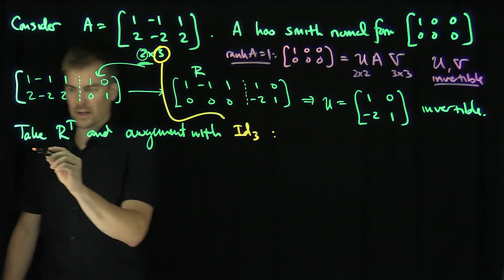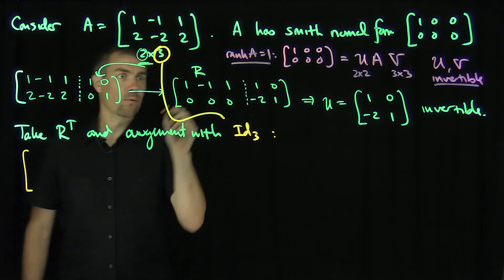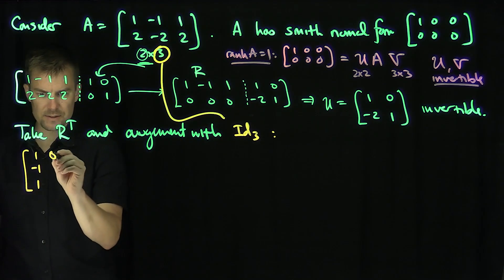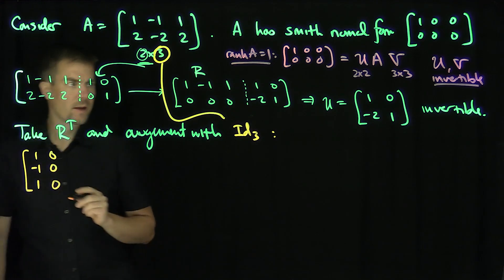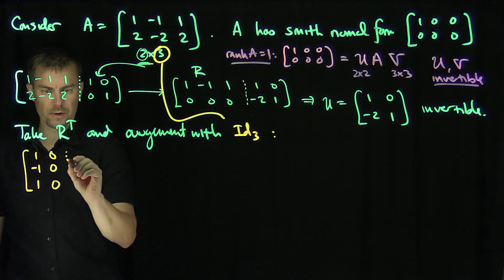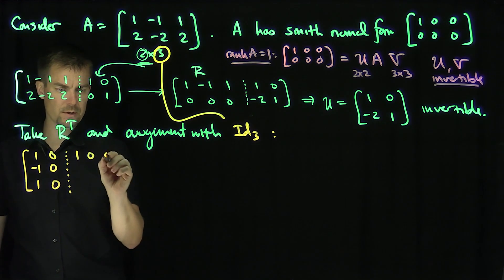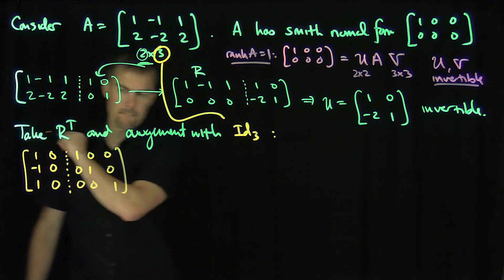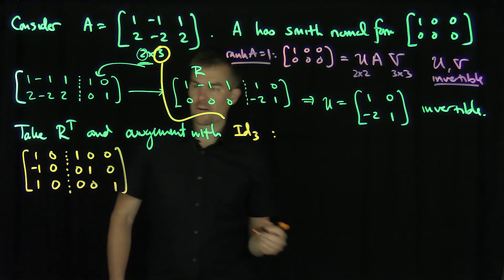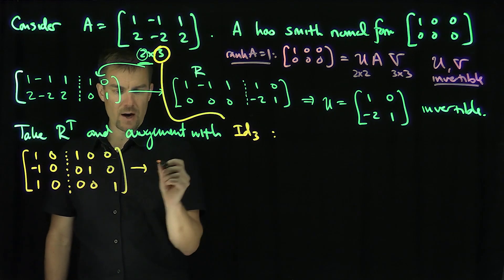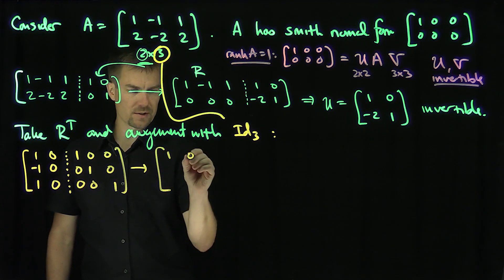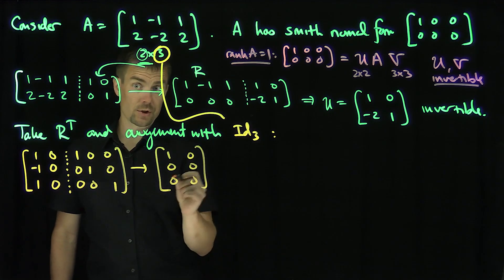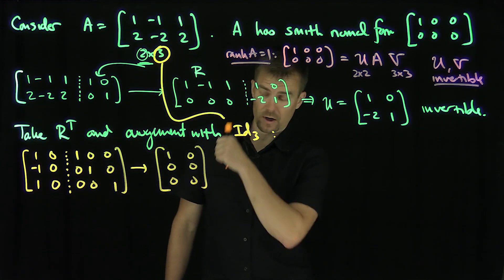The augmented matrix is: row [1, -1, 1] and row [0, 0, 0], augmented with the 3 by 3 identity [[1,0,0],[0,1,0],[0,0,1]]. I'm going to reduce this to [[1, 0, 0], [0, 0, 0]], which is the transpose of my Smith normal form.